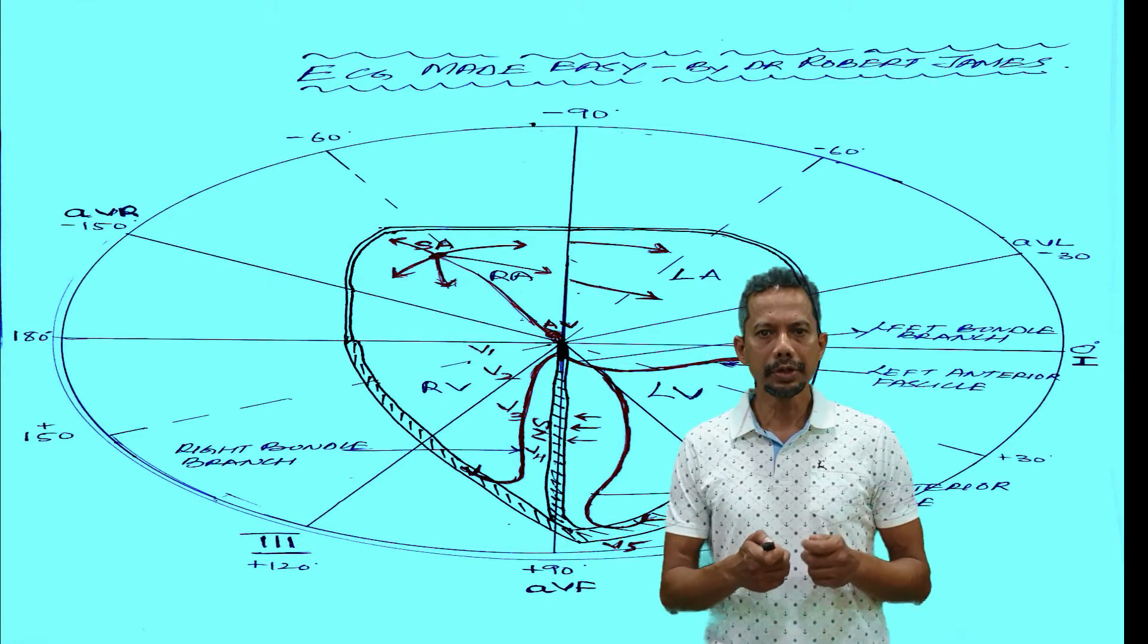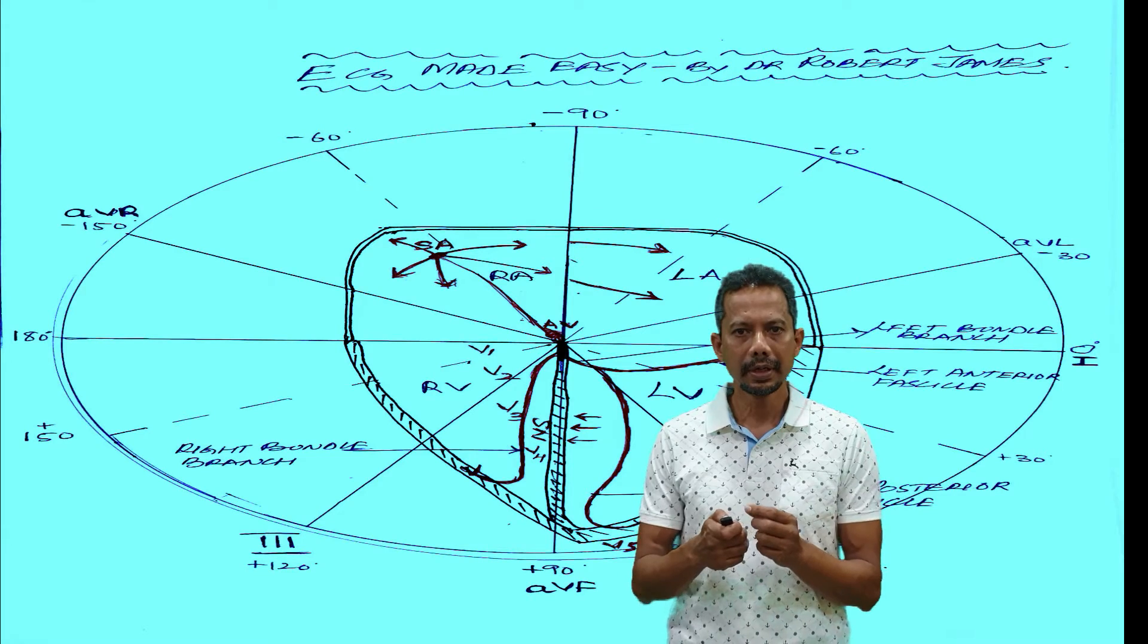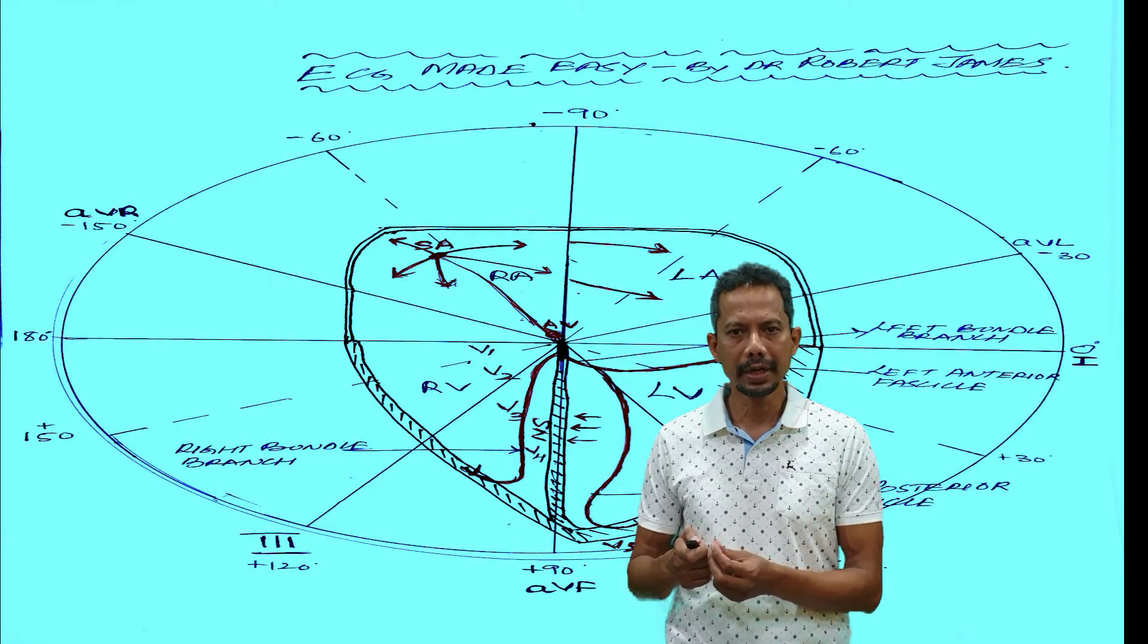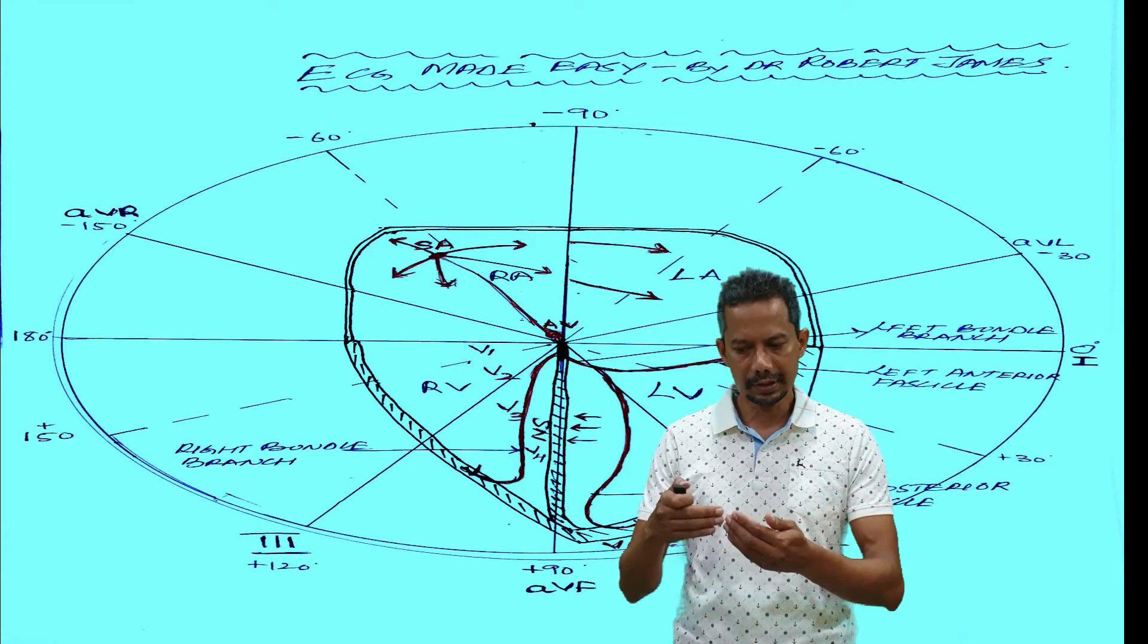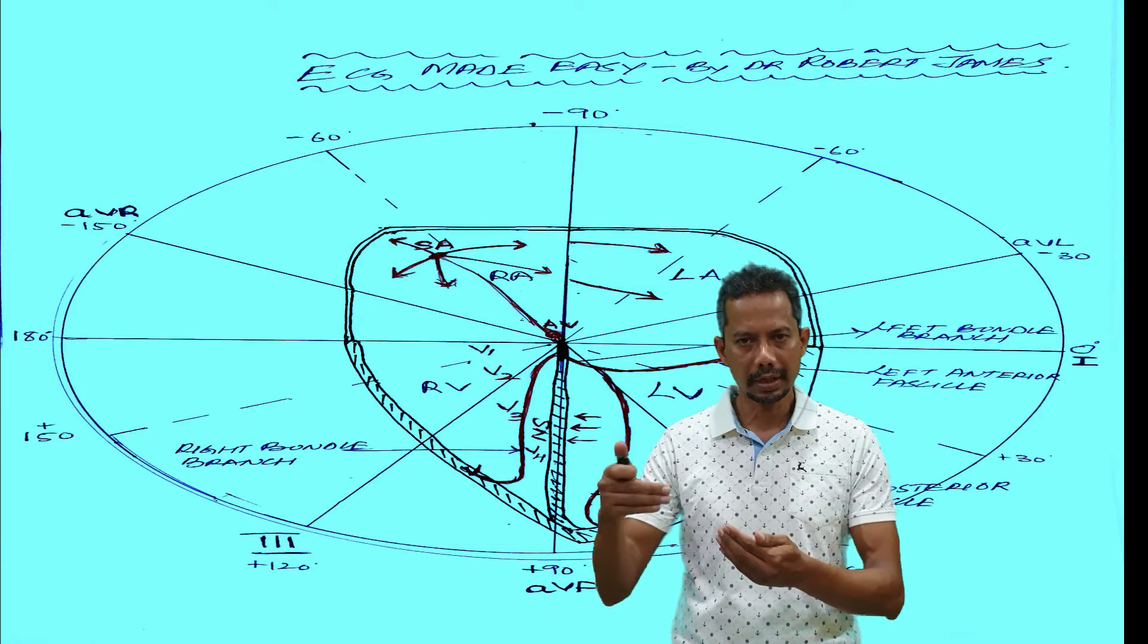Another thing you should remember is V5 is at the tip of the LV at the apex, and V6 goes a little posteriorly laterally.